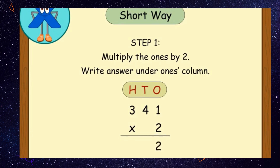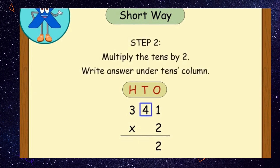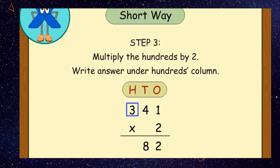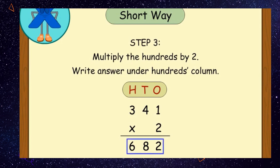Write the answer below the ones column. Then multiply the tens with the one digit number and write the answer below the tens column. Lastly, multiply the hundreds with the one digit number and write the answer below the hundreds column. So the answer comes out to be 682.